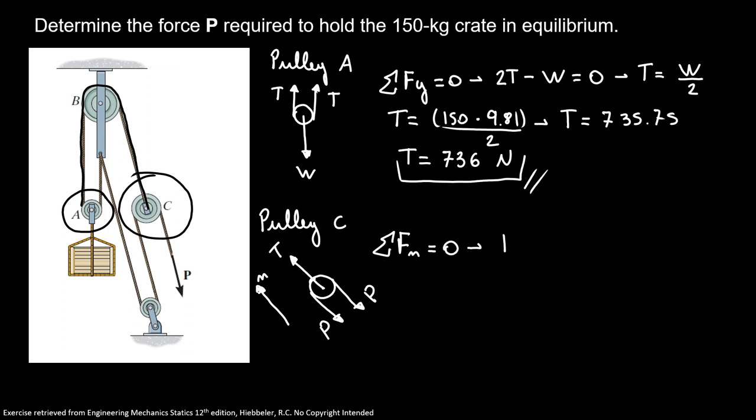So here, I have T minus 2P equals zero. So here, I have that P equals tension over 2.